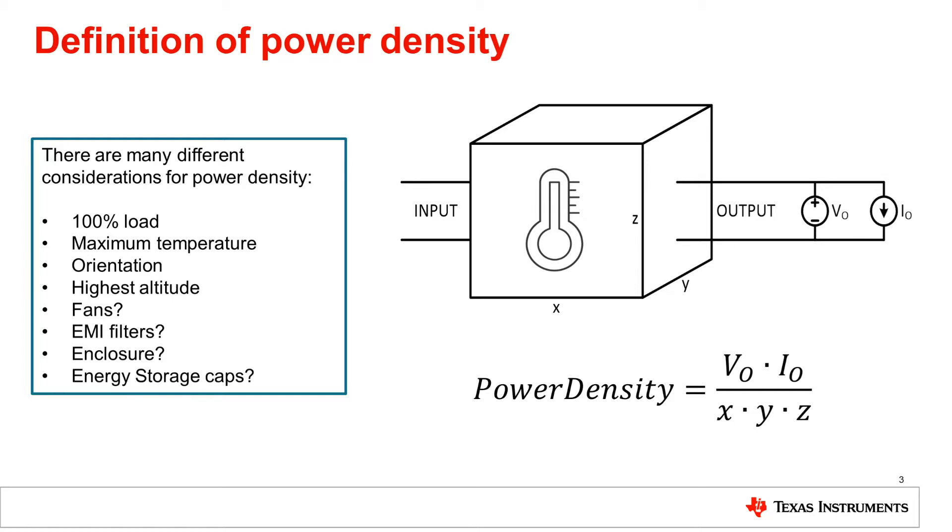Similarly, the volume of the power supply can be defined in many different ways depending on the unit's application and construction. Some of the usual variables that can significantly impact the volume and consequently the reported power density of the power supplies are the inclusion or exclusion of EMI filters, fans, housing requirements, input and output energy storage capacitors, which are often required but not part of many of the modularized power supplies. Therefore, it is imperative to know and consider all these variables when comparing reported power density data from the literature.